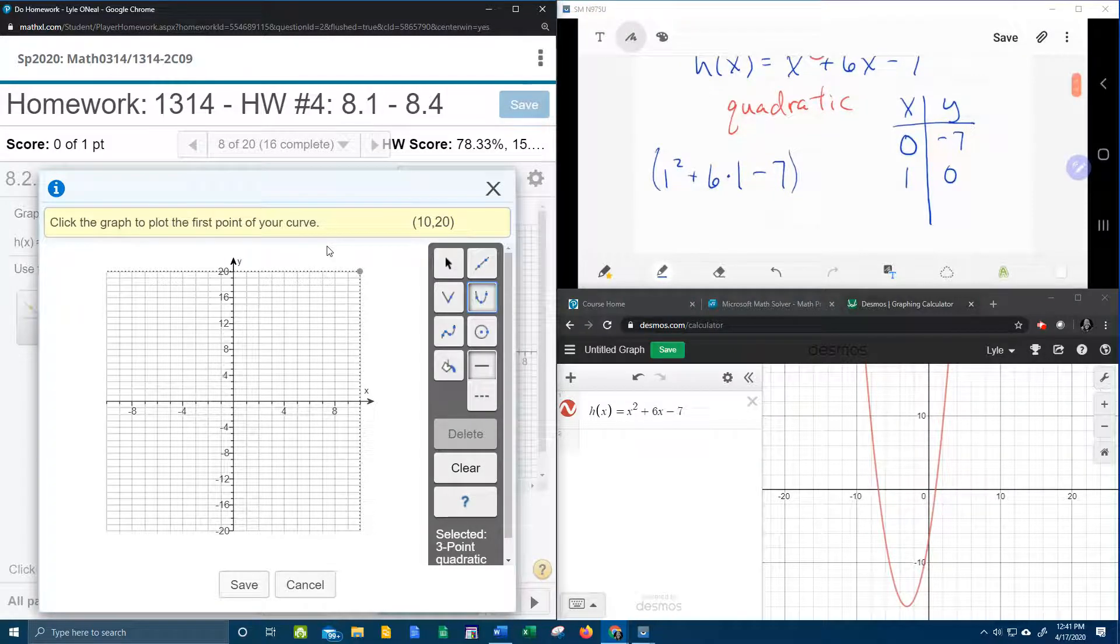Now I need another x, one more x, let's say negative 1, so that's going to be negative 1 squared plus 6 times negative 1 minus 7, and if we plug that into our handy dandy calculator, let's see,